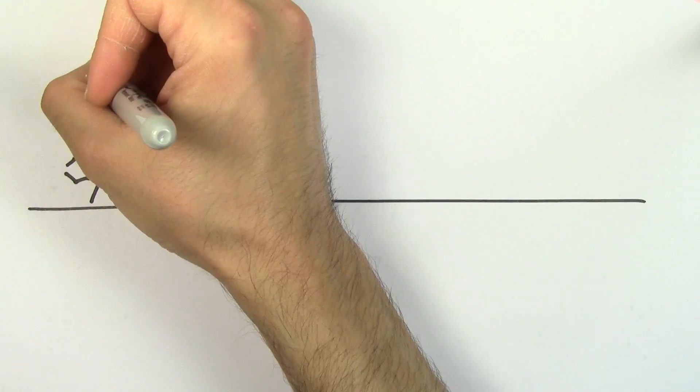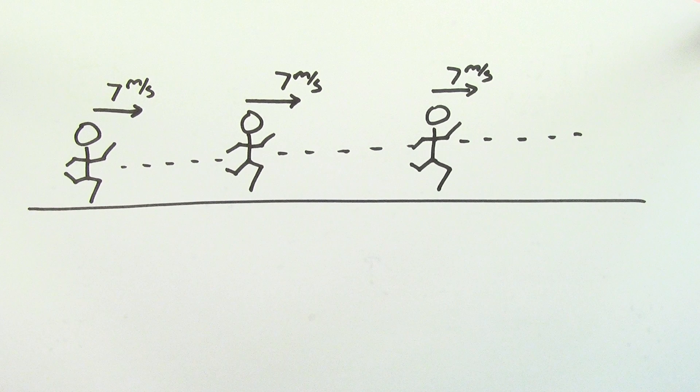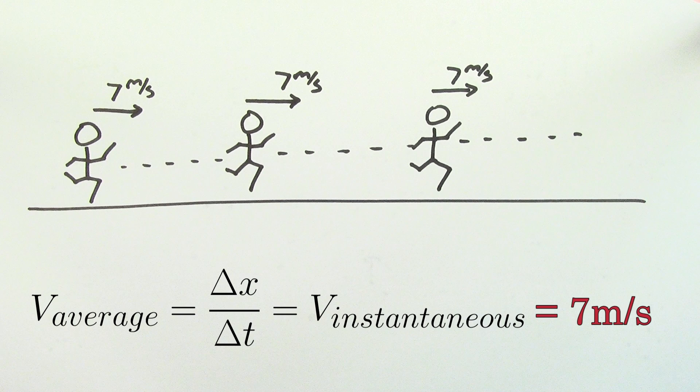The first way is so simple that it's kind of obvious. If you're lucky enough to have a case where the velocity of an object doesn't change, then the formula for average velocity is just going to give you the same number as the instantaneous velocity at any point in time.